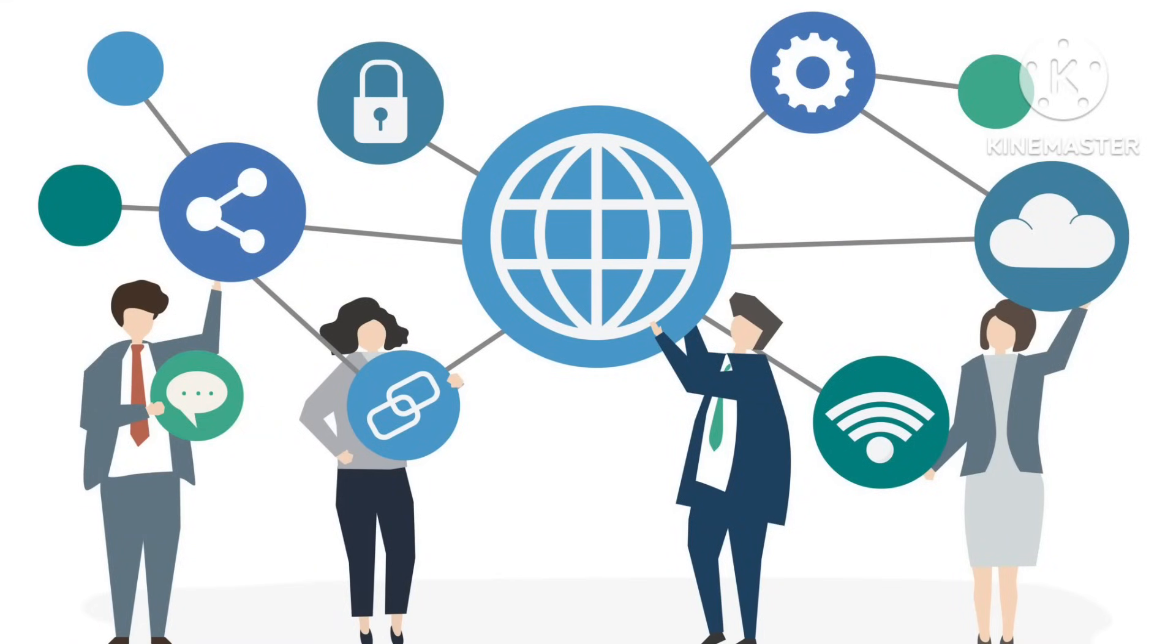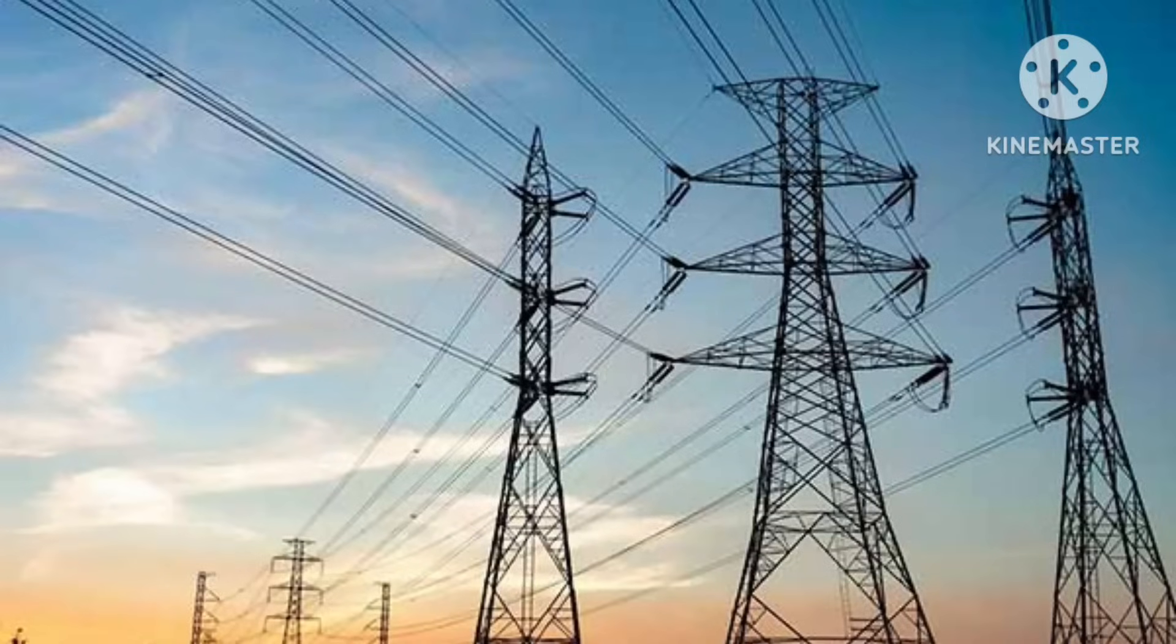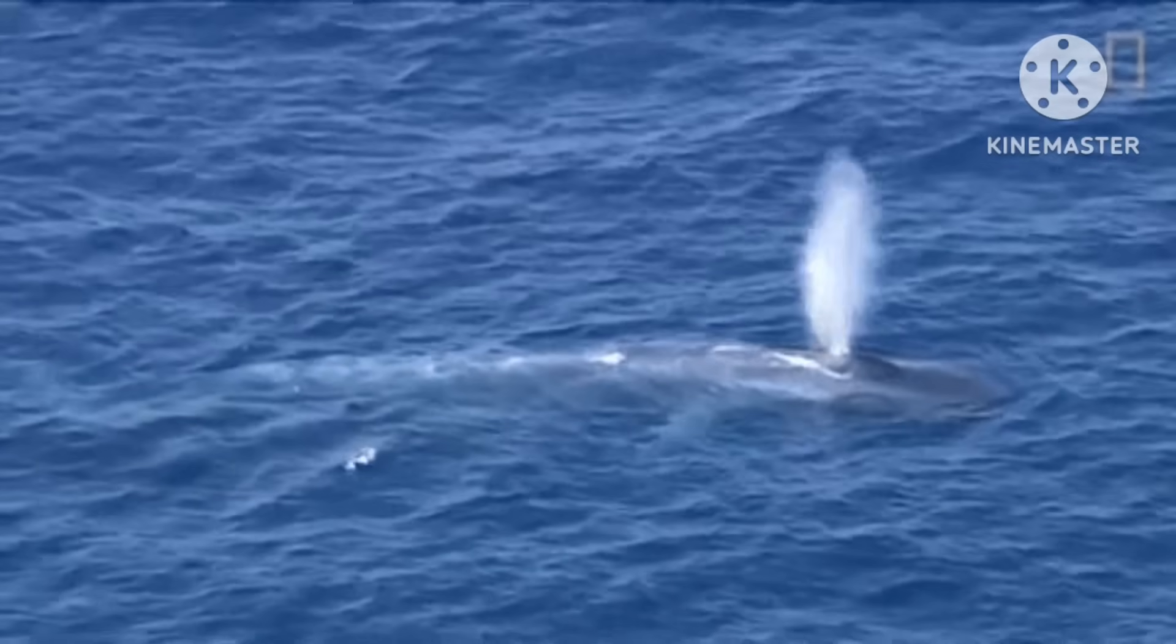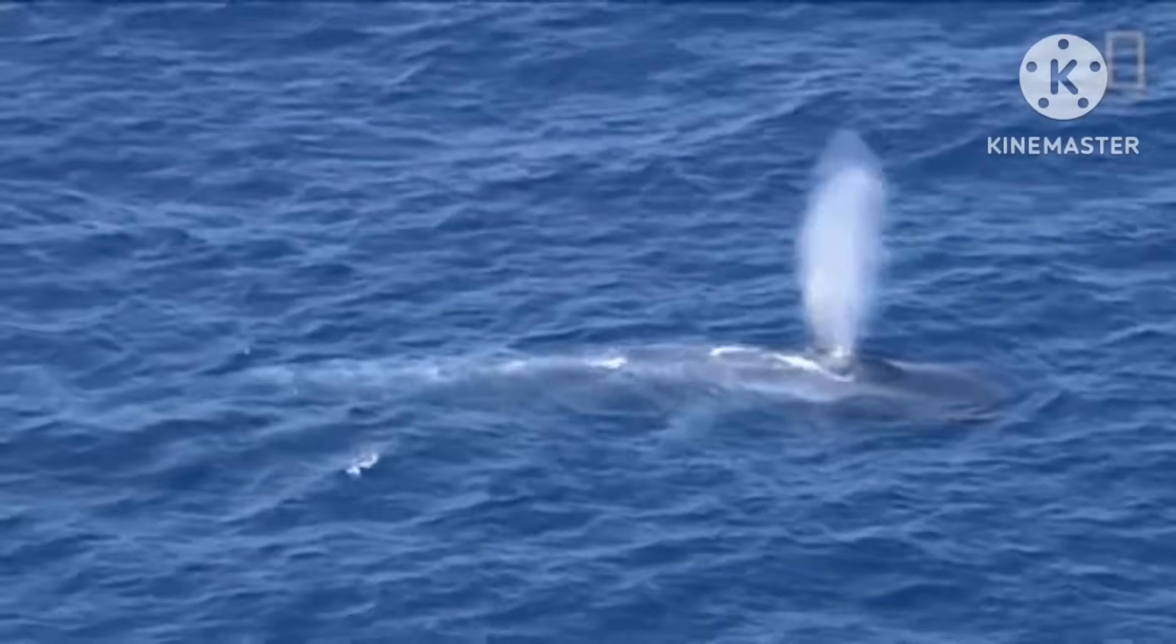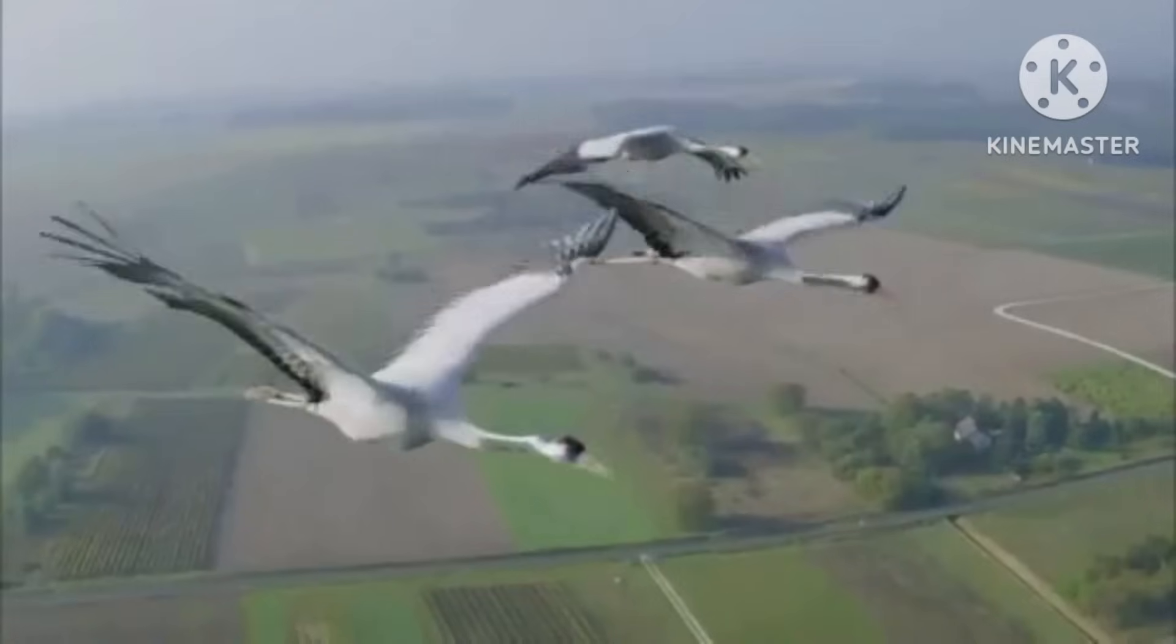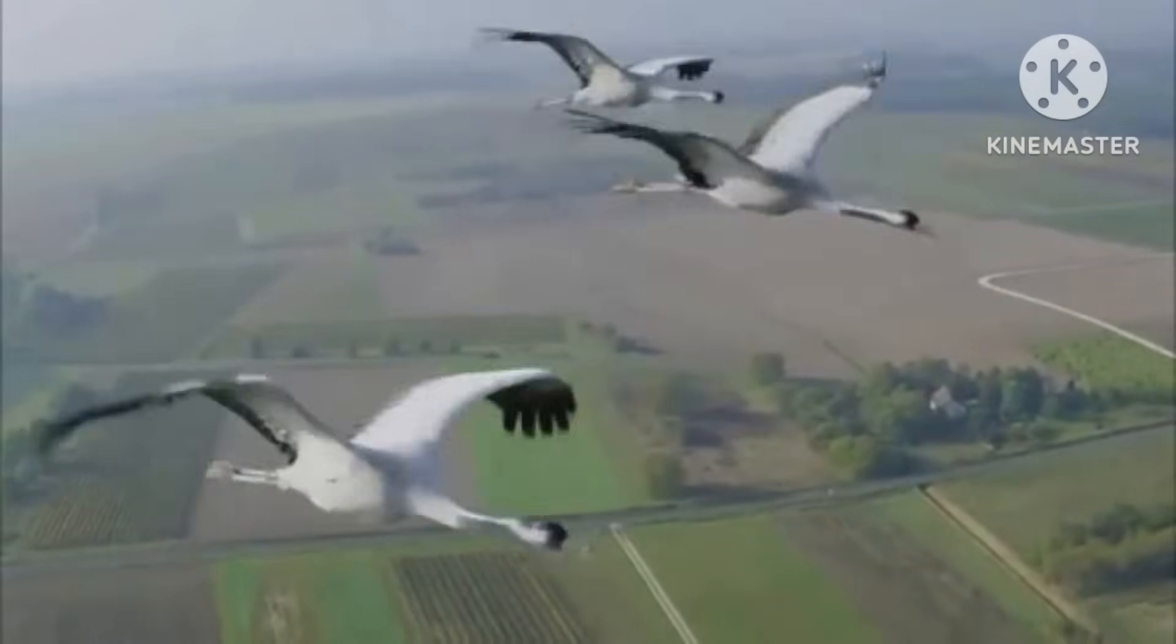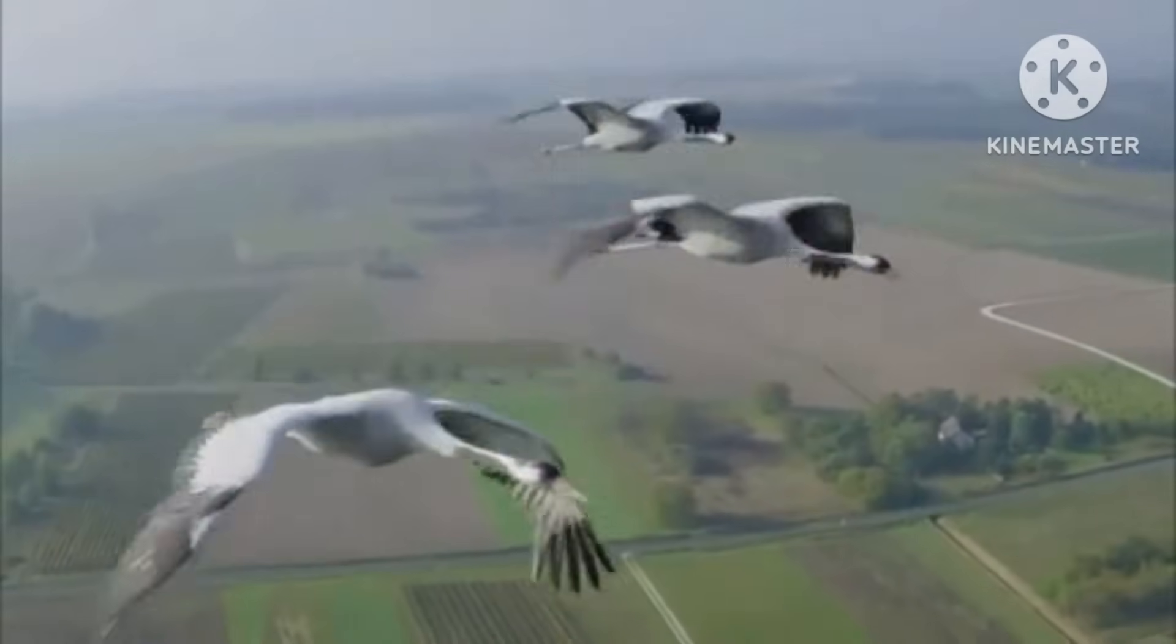A flipped magnetic field could seriously disrupt communication systems and power grids. Birds, whales, and other migratory animals that use the field to establish a sense of direction could encounter problems.